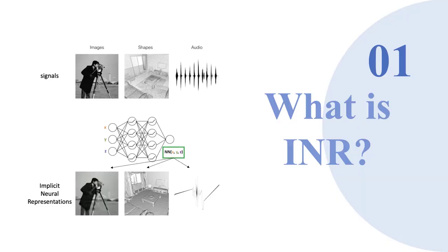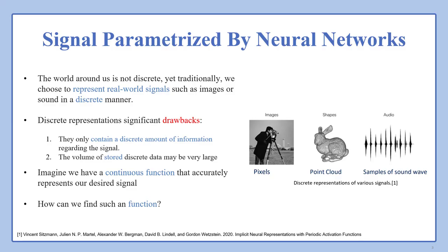First of all, what is INR or implicit neural representation? The world around us is not discrete, yet we traditionally choose to represent real-world signals such as images or sound in a discrete manner. However, these representations have some drawbacks. They only contain a discrete amount of information regarding the signal, and the volume of stored discrete data may be very large.